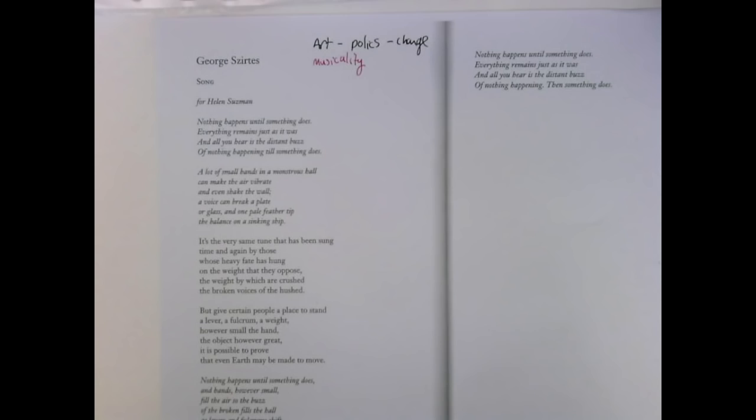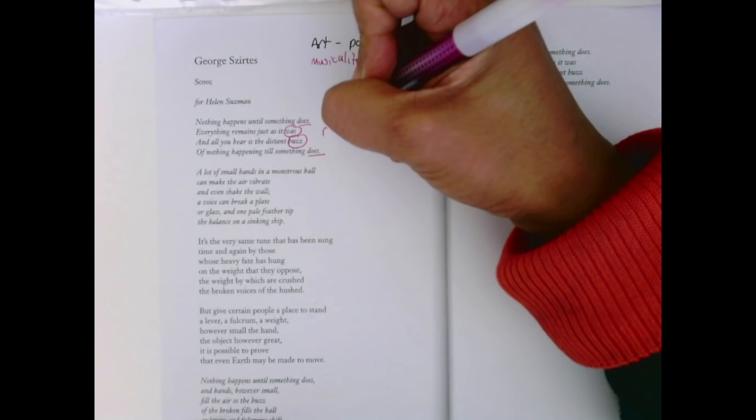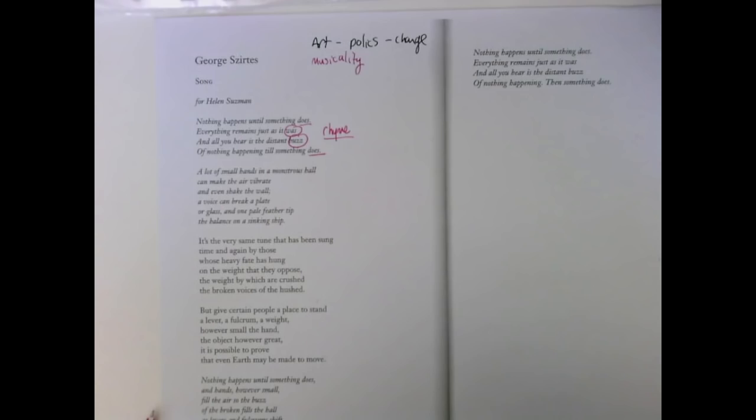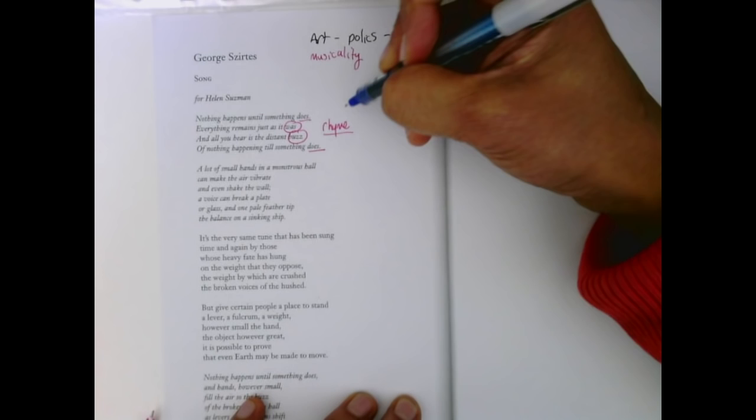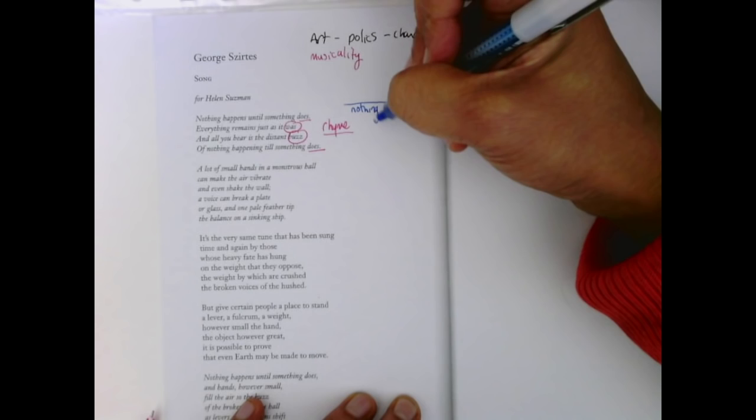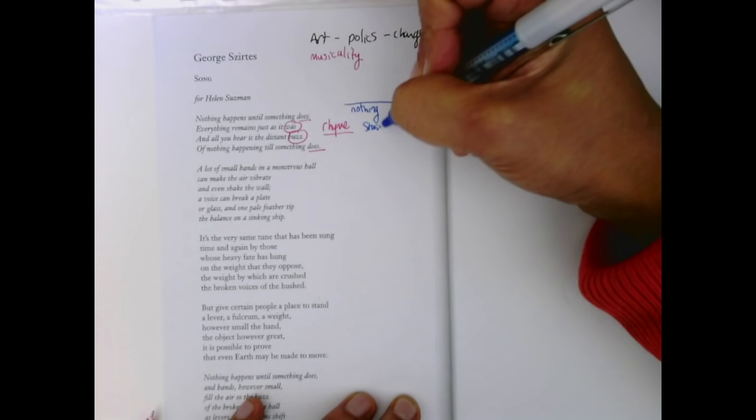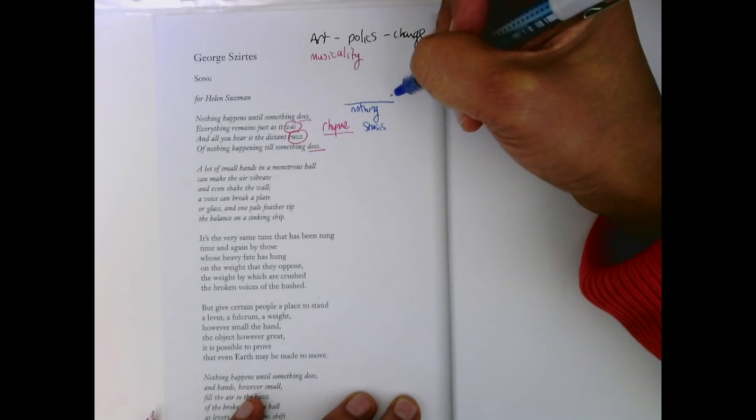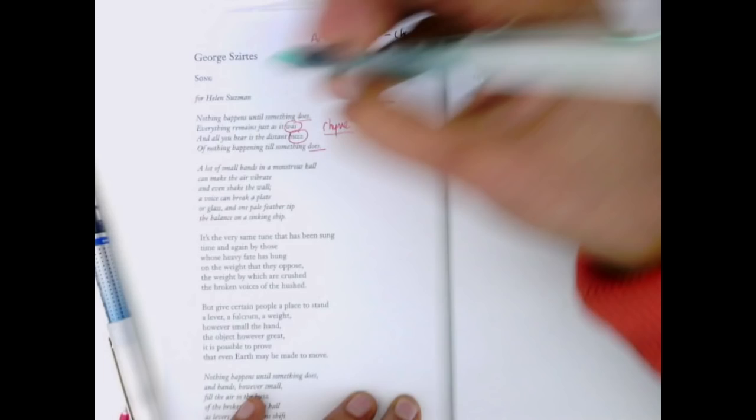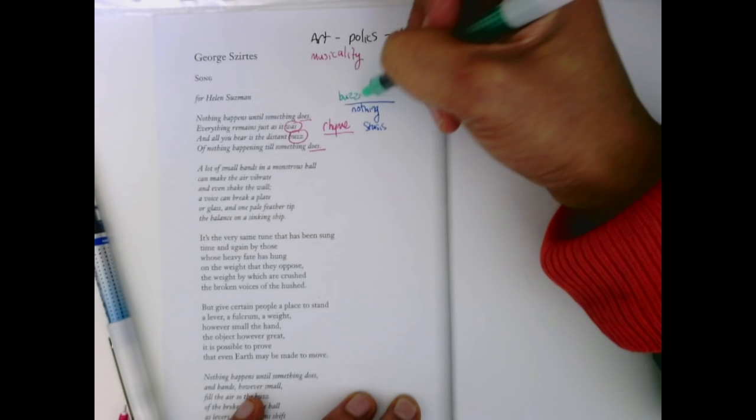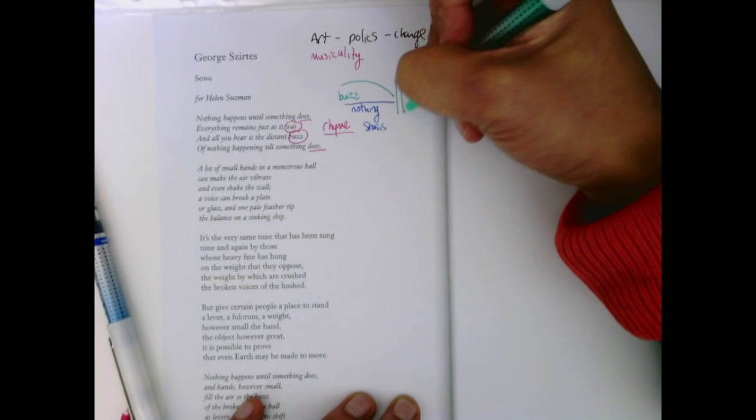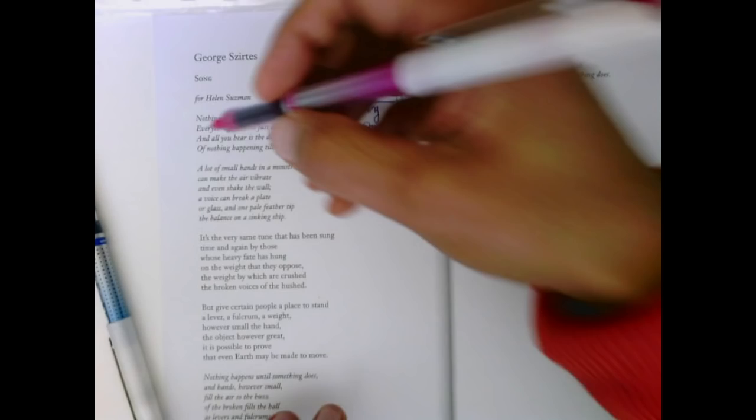Nothing happens until something does. Everything remains just as it was, and all you hear is the distant buzz of nothing happening until something does. So you get that repetition, and you get this rhyme already. This idea is going to be continued and varied in the poem. The general state of being is nothing, stasis, and nothing is happening. Everything's staying the same. And in the background, there's this kind of buzz. You hear it, and then all of a sudden, there's a moment where something occurs.